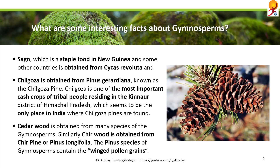Cedar wood is obtained from many species of gymnosperm. Similarly, chir resin is obtained from chir pine or Pinus longifolia. The Pinus species of gymnosperms contain winged pollen grains.